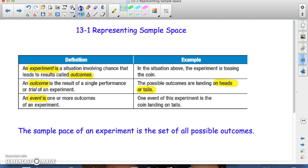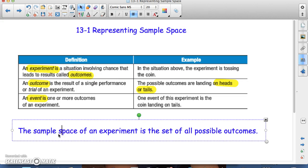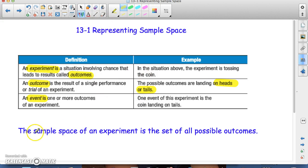Another vocab word is the sample space. The sample space of an experiment is a set of all possible outcomes.